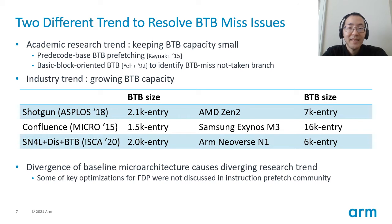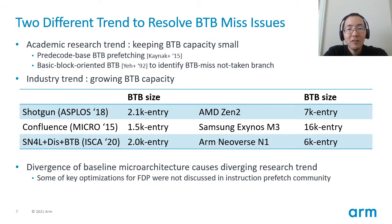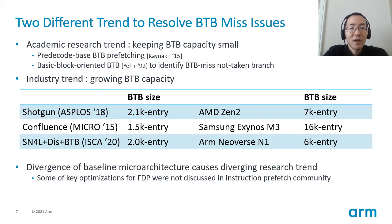Mitigating performance penalty due to BTB misses is important to improve FDP performance. However, we found that industry and academia chose different approaches for this issue. Academic research trend is adding extra optimizations without extending BTB capacity — for example, many research papers propose to use BTB prefetching to minimize BTB misses. On the other hand, industry trend is simply extending BTB capacity. As shown in the table, academic papers are using about 2,000-entry BTB while commercial processors use much bigger BTB. We also found that a couple of key optimizations for FDP were missing in recent research papers. We think these divergences happened because the community did not share a common baseline microarchitecture for FDP.